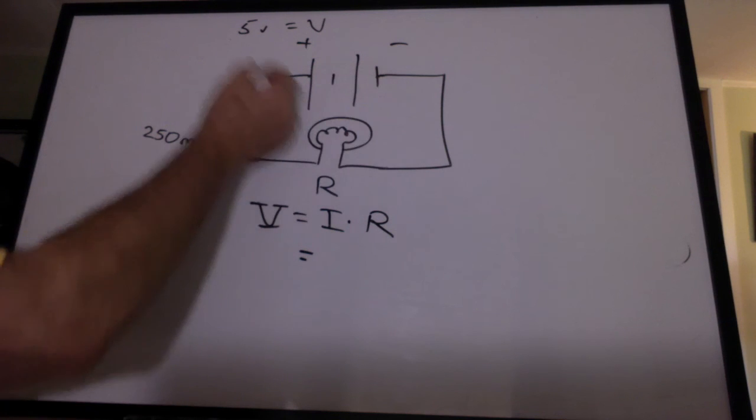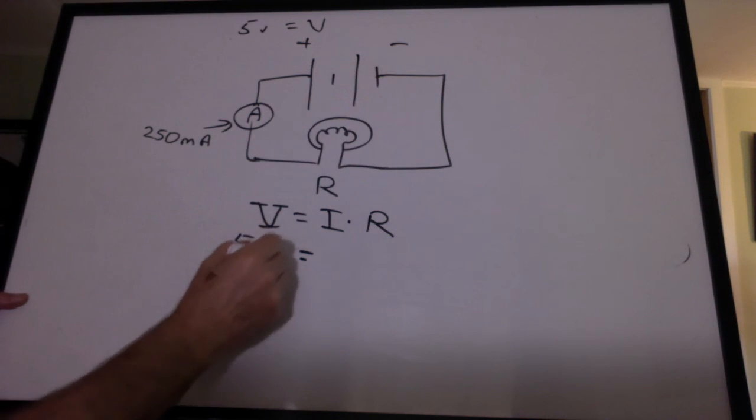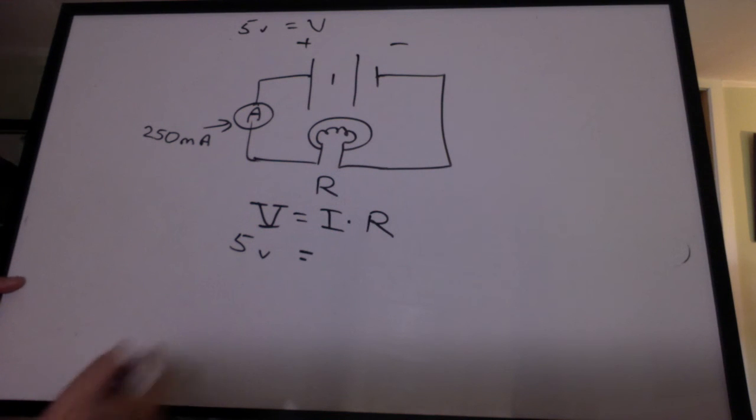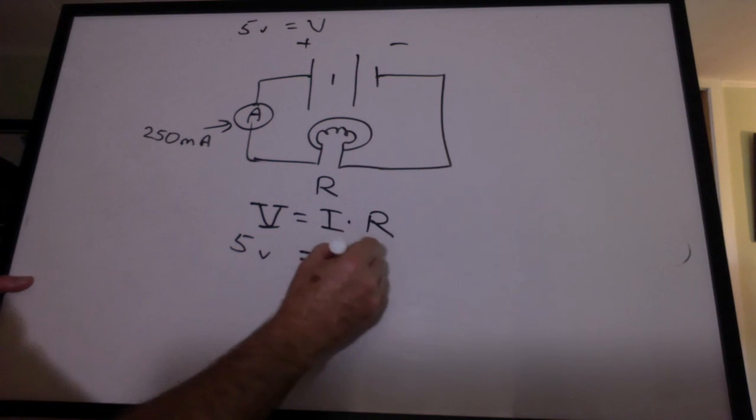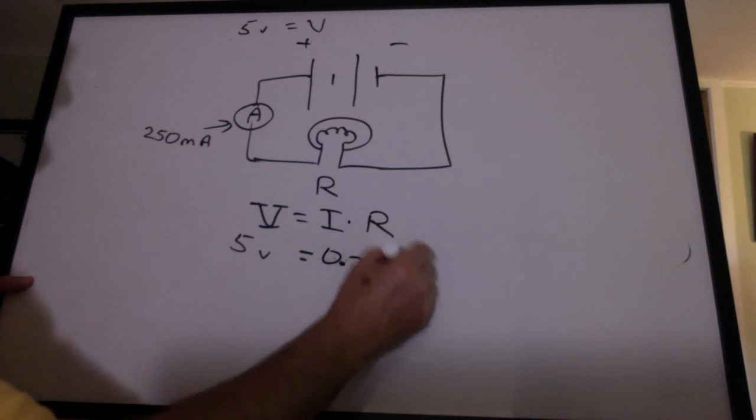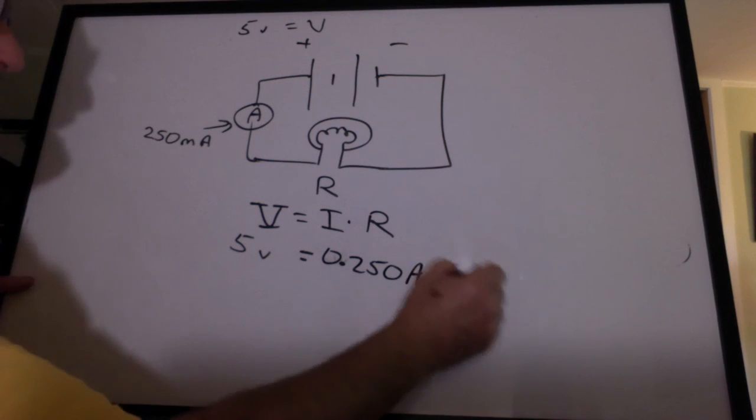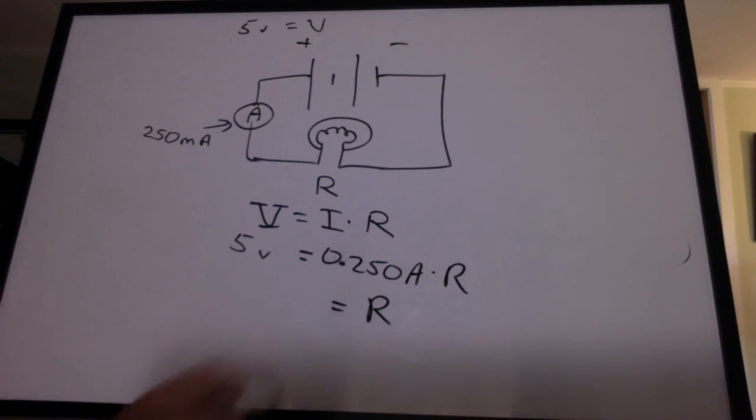If we gain five volts from the battery, we're going to lose five volts going across the light bulb. The current is 0.250 amps. And now we'll solve for the resistance. I get 20 ohms.